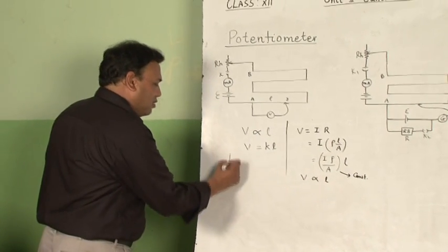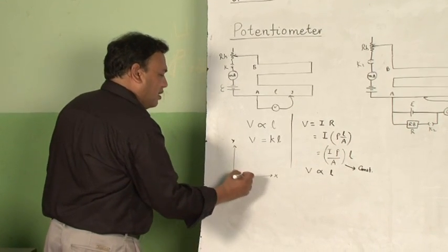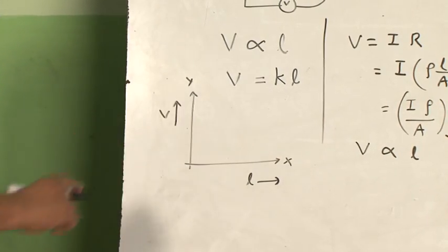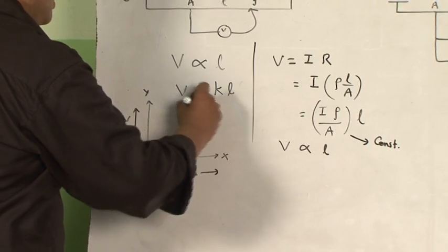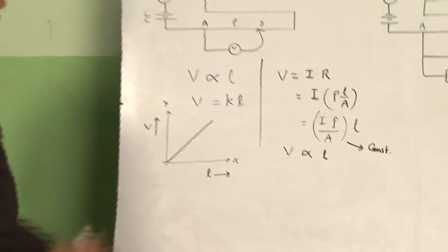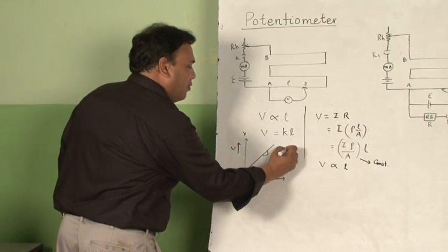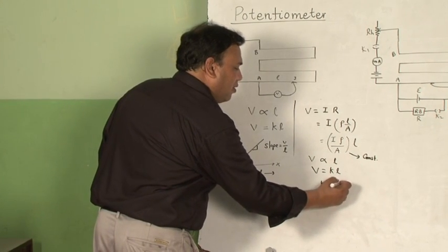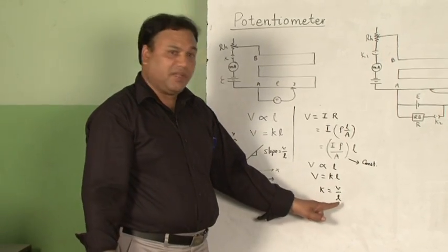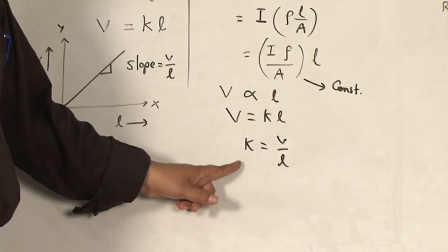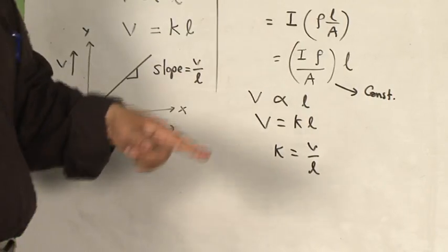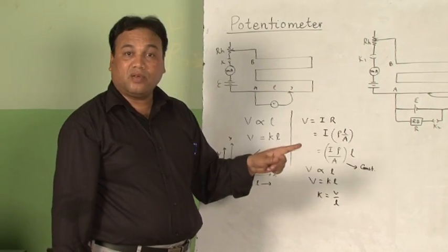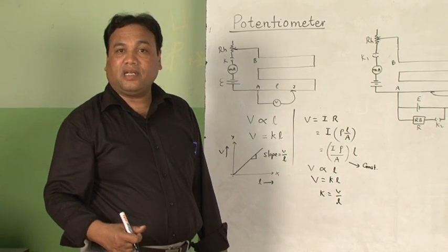The same can be explained with a graph — on the x-axis take the length, and on the y-axis take the potential difference. As length increases, potential difference increases proportionally, so you get a straight-line graph. The slope of this graph is V by L, meaning K equals V by L. If the length is more, the value of K is less, and the potentiometer is said to be more sensitive when the value of K is very small — that is, when the length of the potentiometer wire is greater.